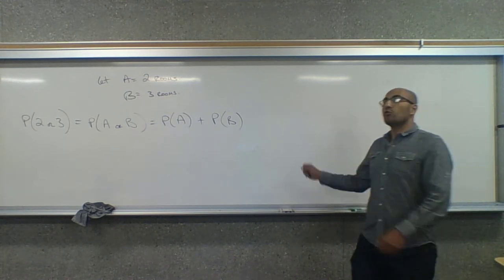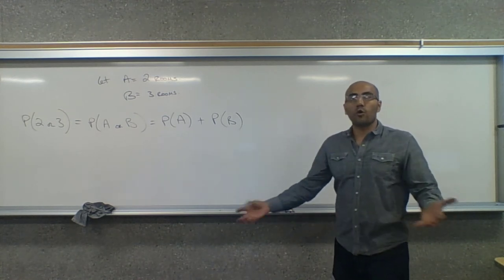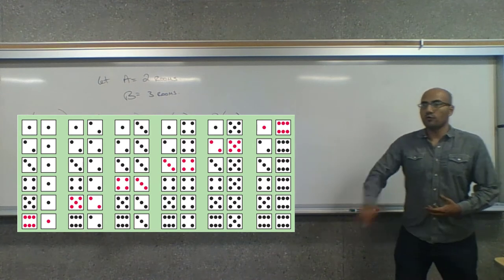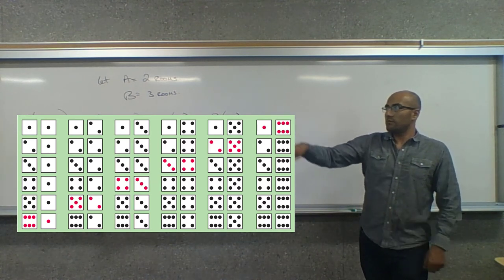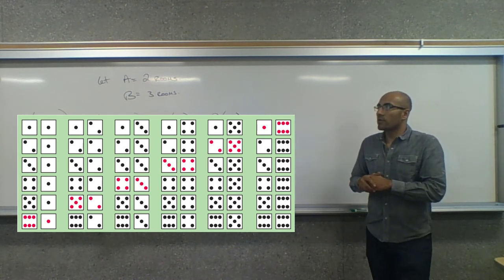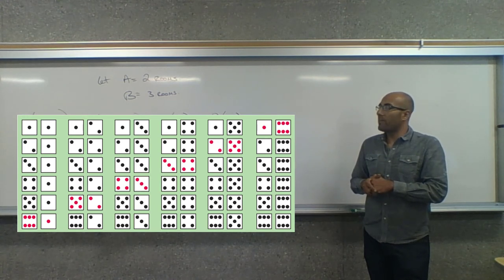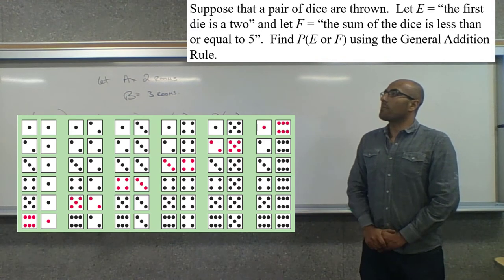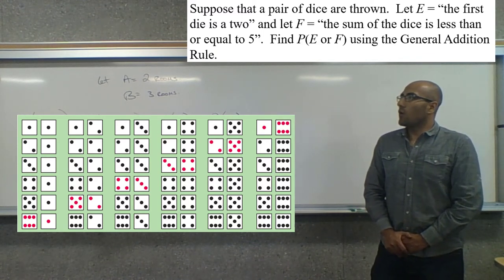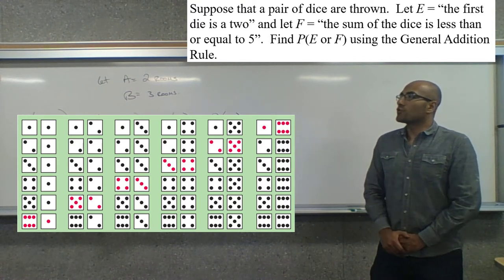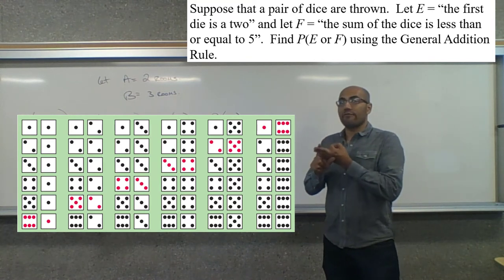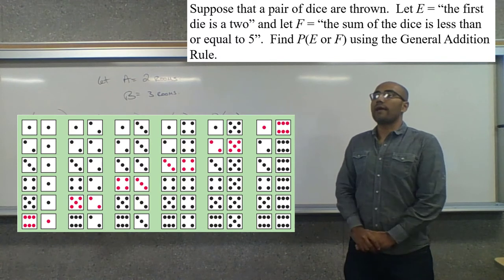For example, let's say we roll two dice. There are 36 possible outcomes when rolling two six-sided dice. Let event E be that the first die shows a two, and let event F be that the sum of the dice is less than or equal to five. To find the probability of E or F using the general rule, we first find the probability of E by itself, then the probability of F by itself, then the probability that both happen at the same time.